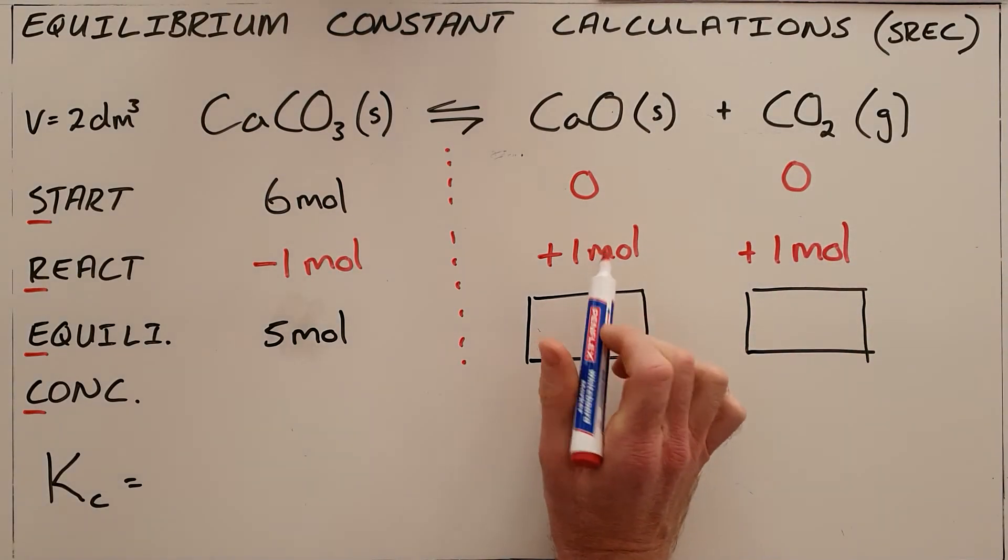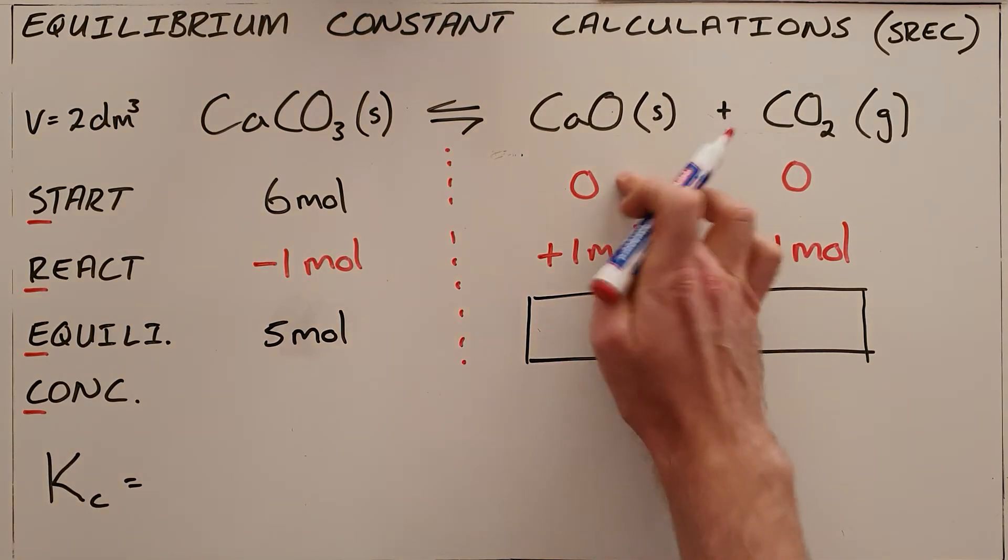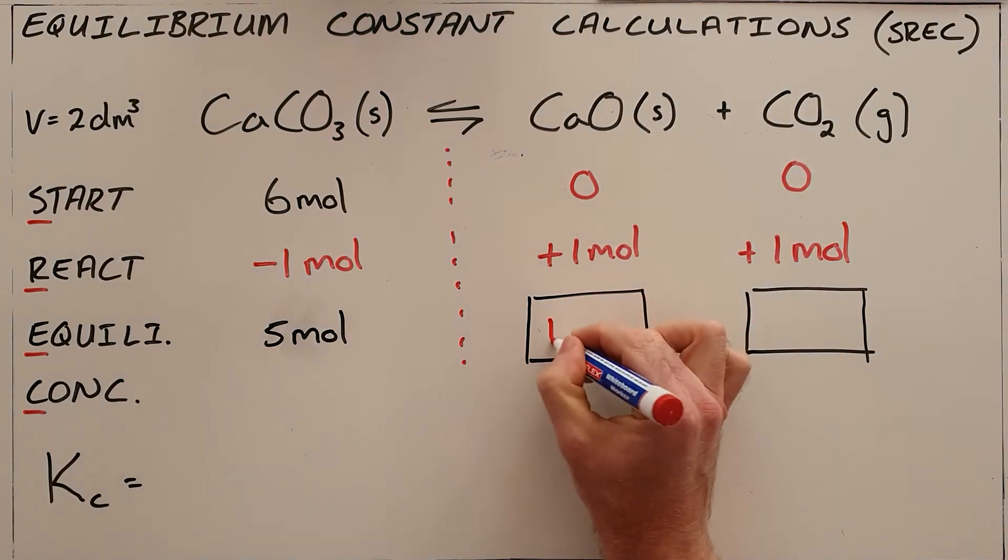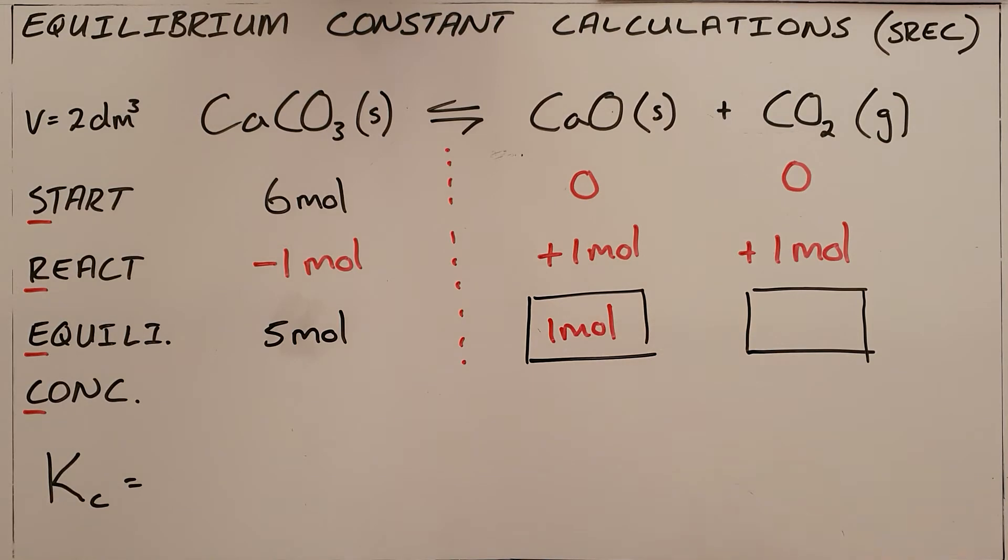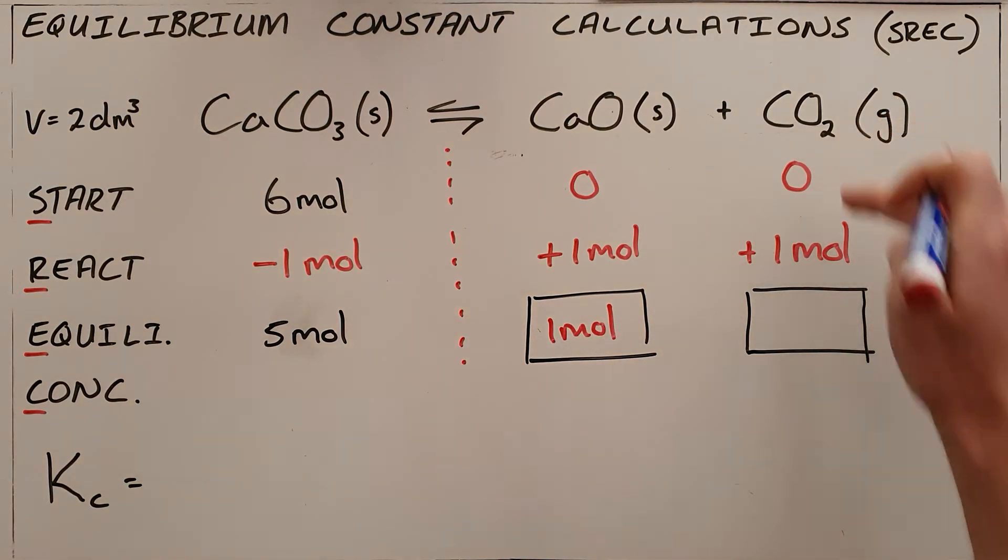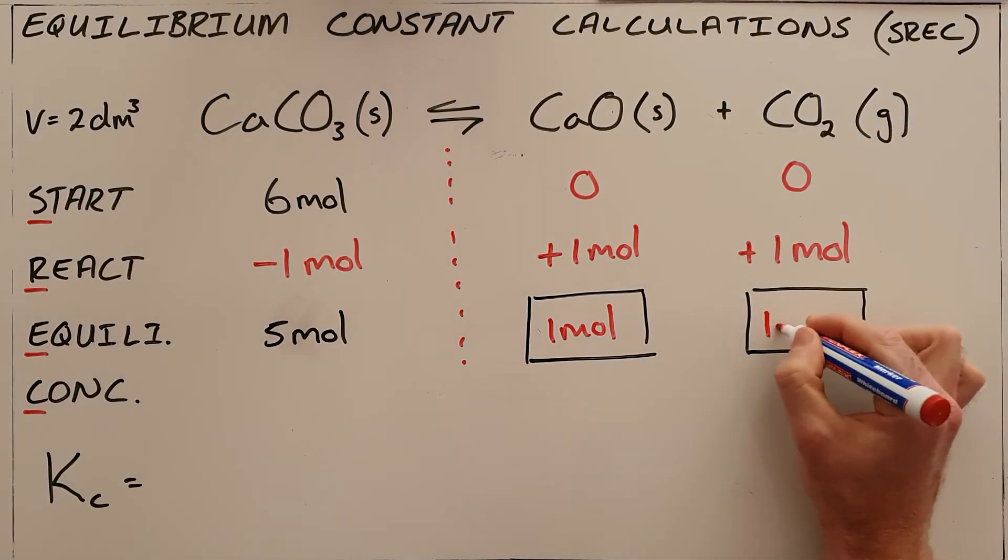So what this tells us is that at equilibrium, if we started with 0 and added 1 mole, we must have 1 mole of calcium oxide, and the same goes for carbon dioxide, where we have 1 mole.